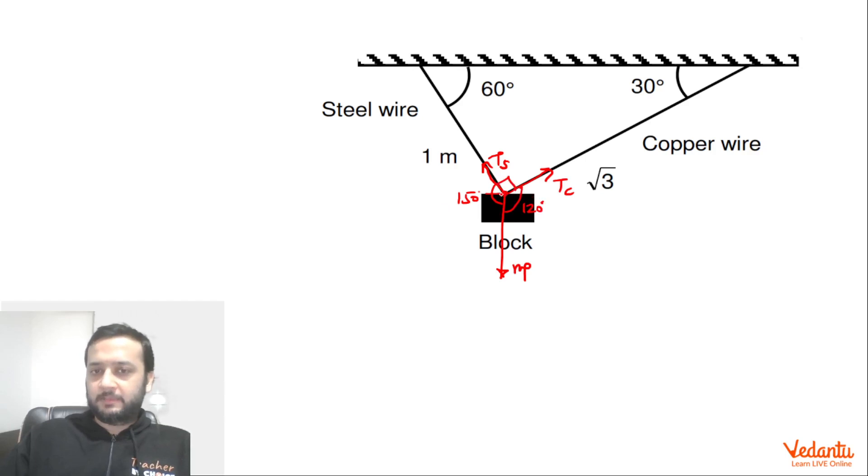Now if you apply Lamy's theorem on this point, so we can say that Ts upon sin 120 is equals to Tc upon sin 150 is equals to mg upon sin 90. Although we don't need this thing, but I wrote it just for completion sake. So from here we can say that sin 120 is sin 60 as well, so we can say it is root 3 by 2, and sin 150 is half because it is sin 30 as well. So we can say that Tc upon Ts equals 1 upon root 3.